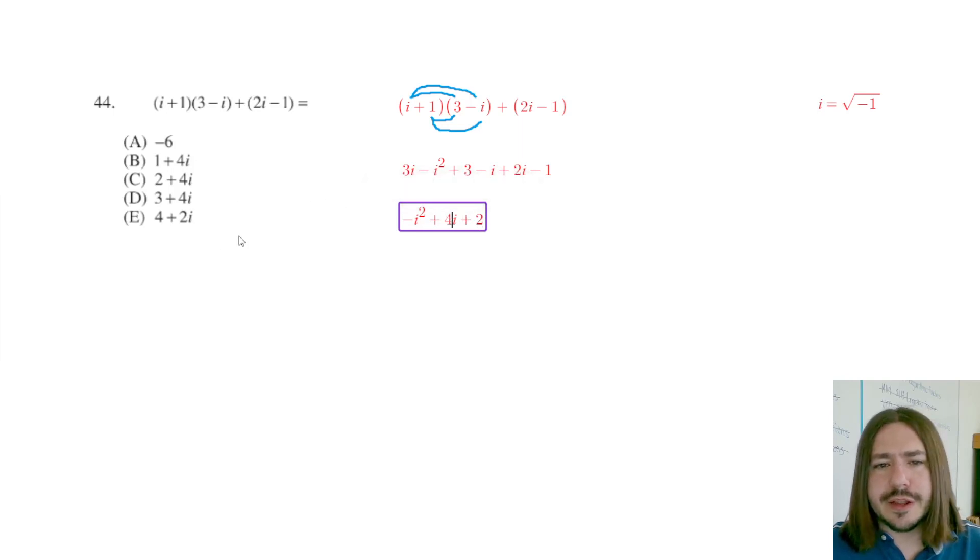So we've got this. But it doesn't really look like any of our answer choices, right? Notice none of the answer choices has an i squared in it. So what's the deal with that? Well, this is going to go back to the fact that i is the square root of negative 1. If i is the square root of negative 1, then i squared would be the square root of negative 1 squared.